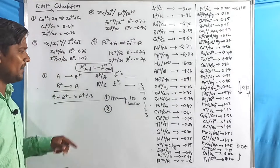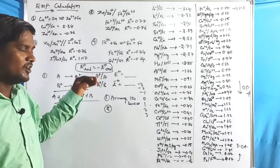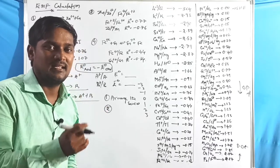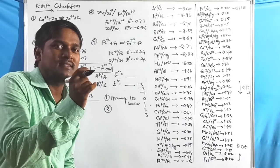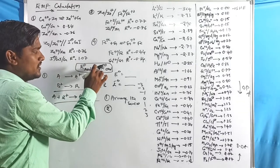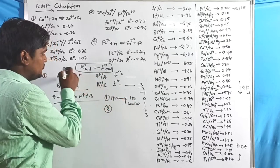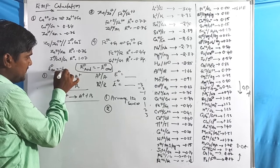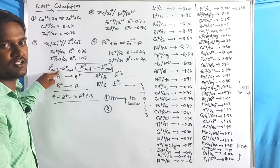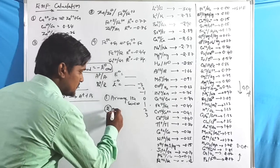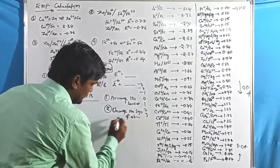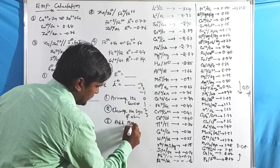The second point: the top electrode is always the anode. The anode undergoes oxidation, but values are given as reduction potentials, so we change the sign of the above electrode. Since E°oxidation = −E°reduction, just put a negative before the reduction value of the top electrode. Third point: add the two values together. These three steps are enough to solve any EMF calculation.